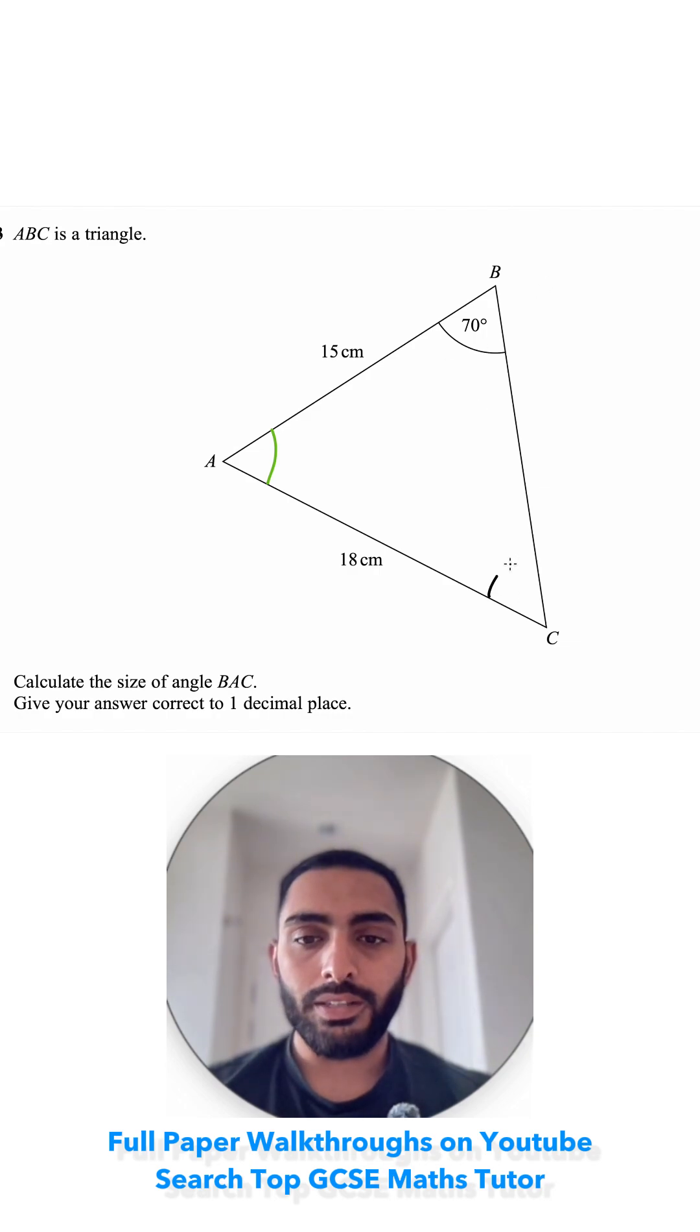Because I'm trying to find this angle, I'm going to put my angles on the top. Sine of A over A is equal to sine of B over B. Sine of A, sine of 70 over the side opposite to it, which is 18,